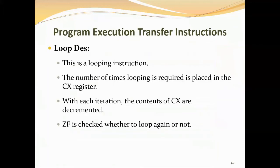Next is the LOOP instruction. The number of times looping is required is placed in the CX register. With each iteration, the contents of CX are decremented and ZF is checked whether to loop again or not. The LOOP instruction repeats a sequence of instructions for the specified number of times. Each time it executes, CX is automatically decremented without affecting any conditional flag. If CX is not zero, execution jumps to the specified label. When CX becomes zero, execution continues to the next instruction after the loop.